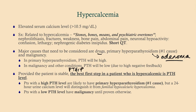Provided the patient is stable, the best first step in a patient who's hypercalcemic is PTH. Patients with a high PTH level are likely to have an adenoma. However, it may be useful to get a 24-hour urine calcium — that will help you distinguish it from familial hypocalciuric hypercalcemia (FHH), which has a fairly complex pathophysiology. Just remember that FHH is the big differential when you have a patient with primary hyperparathyroidism.